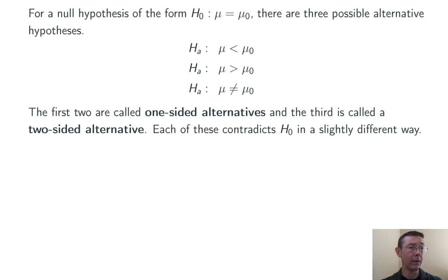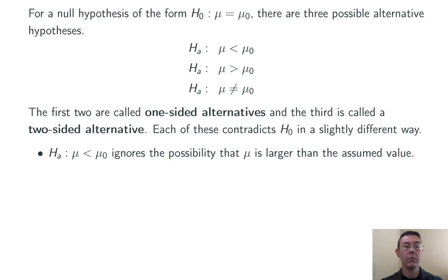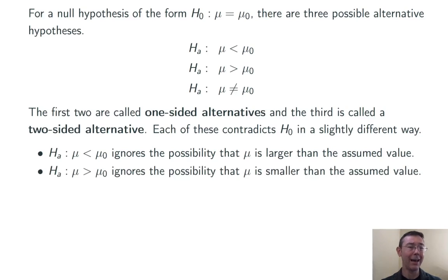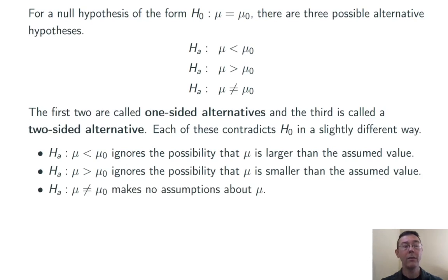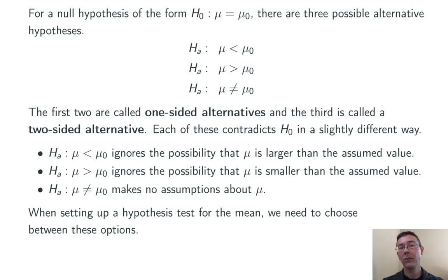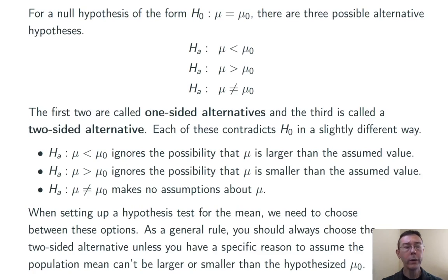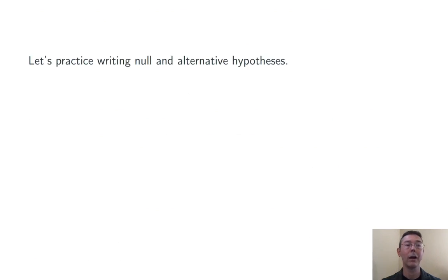Each one of these three contradicts the null hypothesis in a slightly different way. The first one, mu less than mu0, ignores the possibility that mu is larger than the assumed value — we rule it out at the beginning of the test for real-world reasons. The second, mu greater than mu0, ignores the possibility that mu is smaller than the assumed value. As a general rule, you should always choose the two-sided alternative unless you have a specific real-world reason to assume the population mean can't or shouldn't be larger or smaller than mu0. Let's jump into some examples.